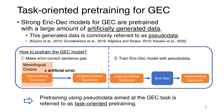For example, Kiyono et al. generated a pseudo-corpus using back-translation and achieved stronger results for English GEC. In this presentation, pre-training using pseudo-data aimed at the GEC task is referred to as task-oriented pre-training.